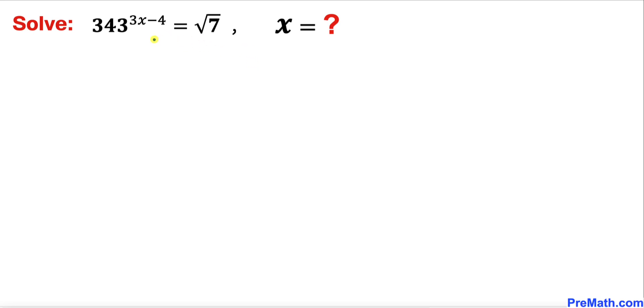Welcome to pre-math. In this video we are going to solve this given exponential equation 343 power 3x minus 4 equal to square root of 7. Please don't forget to give a thumbs up and subscribe. So let's go ahead and get started with the solution and here's the very first step.